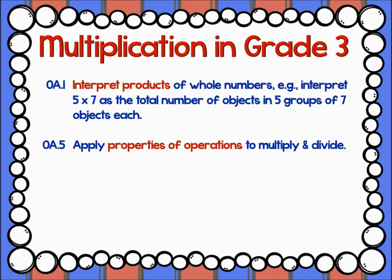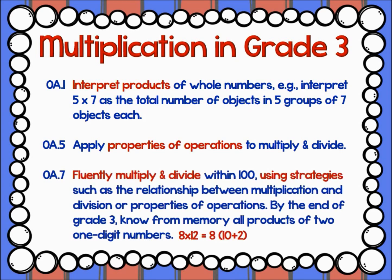Standard OA5 asks students to apply the properties of operations to multiply and divide. As we will see later in this video, this goes a lot deeper than the identity property, zero property, and commutative property. It also gets into using multiplication strategies based on the distributive property. Standard OA7 asks students to fluently multiply and divide. The word fluent here means efficient, accurate, and within a reasonable amount of time. This means that students should be able to use efficient strategies to multiply until facts are committed to memory. If students are unable to remember a fact, they can then go back and rely on that familiar strategy.